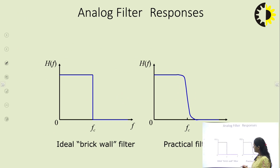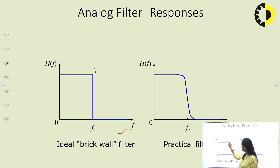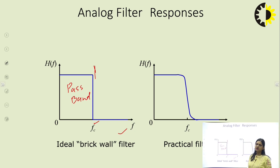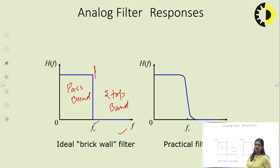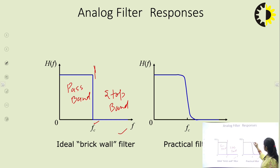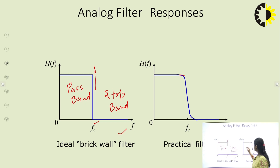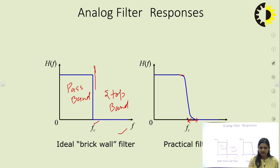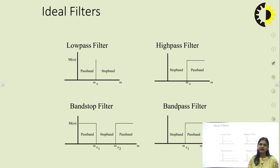Here in the slide you can see the ideal brick wall filter, where the blue line shows the cutoff point — that is the cutoff frequency. Before this cutoff frequency, all frequencies will be passed, so this is the pass band. After the cutoff frequency, the circuit will reject or attenuate all frequencies — this is the stop band. In a practical filter, there is a transition from pass band to stop band, whereas in the ideal case the transition time is zero.